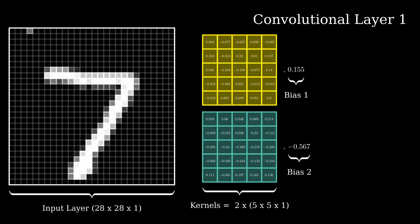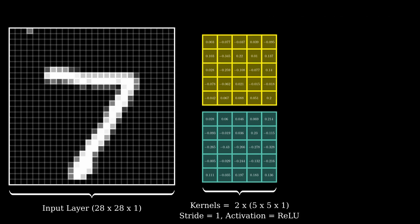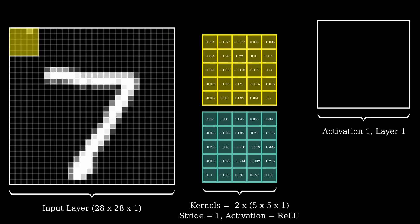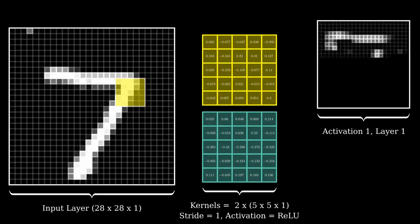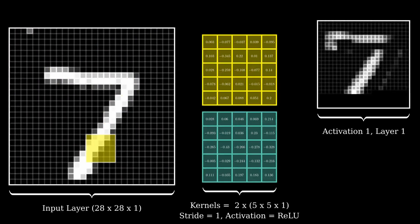One for each filter. We'll use a stride of 1 and an activation function called ReLU. We start with the first filter and map the activations onto activation 1 in the first layer.